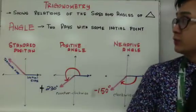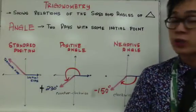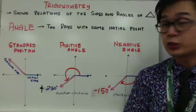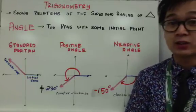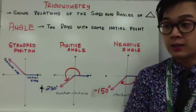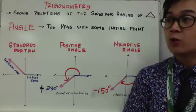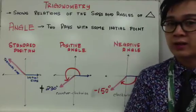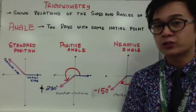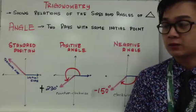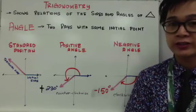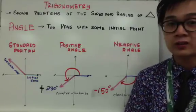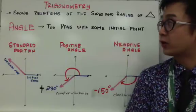Trigonometry. By definition, trigonometry is a branch of mathematics that shows the relations of the sides and angles of a triangle. In your geometry class, we've dealt with a lot of triangles — we have right triangles, scalene triangles, acute triangles, and a lot more.